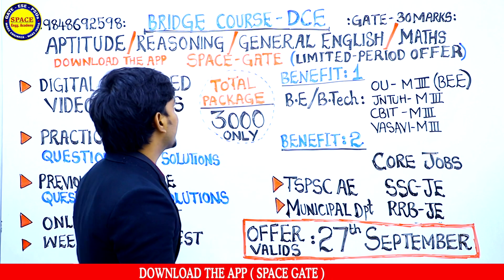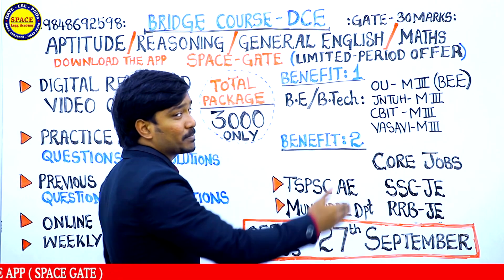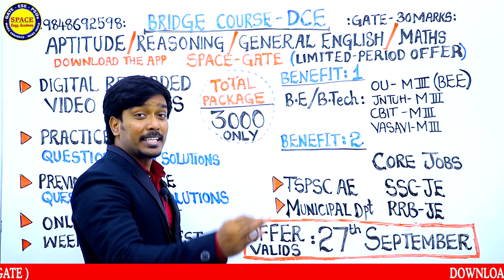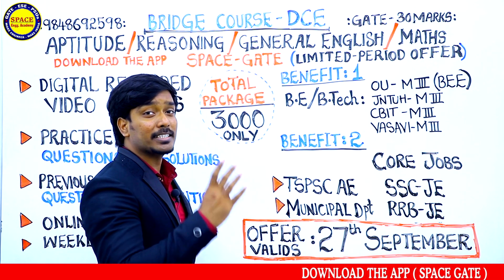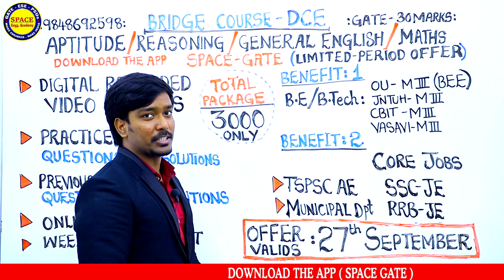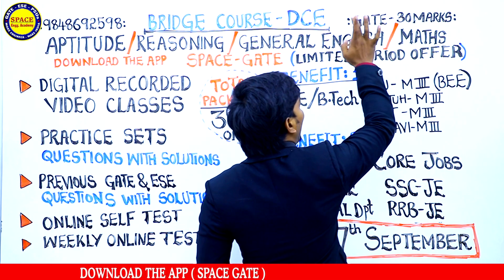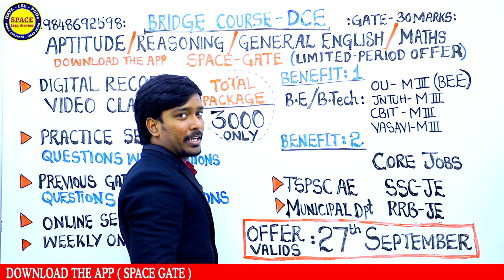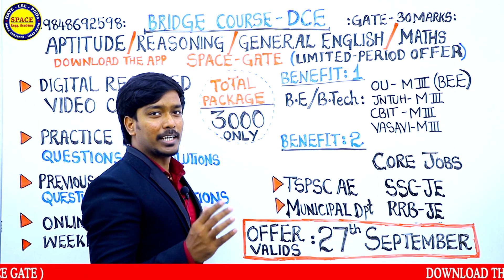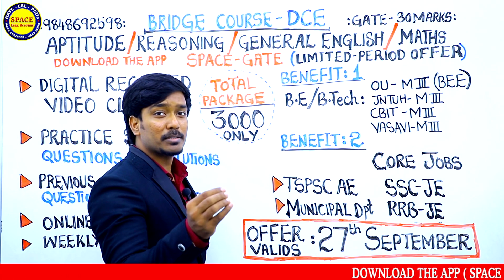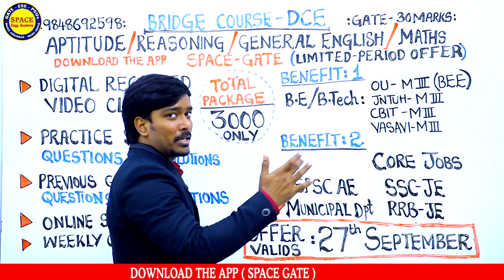In this bridge course, we have aptitude, reasoning, English, and mathematics — that are 30 marks syllabus in the GATE examination. We qualify for it with 25 to 30 marks. In our GATE examination, it is easy to qualify; it is 30 marks.